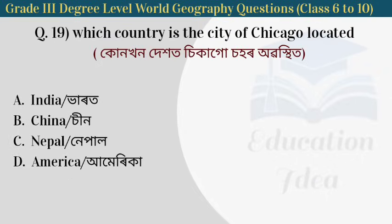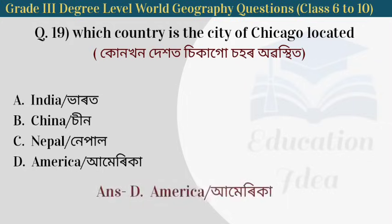Next question: which country is the city of Chicago located in? The answer is America — Chicago is located in America.